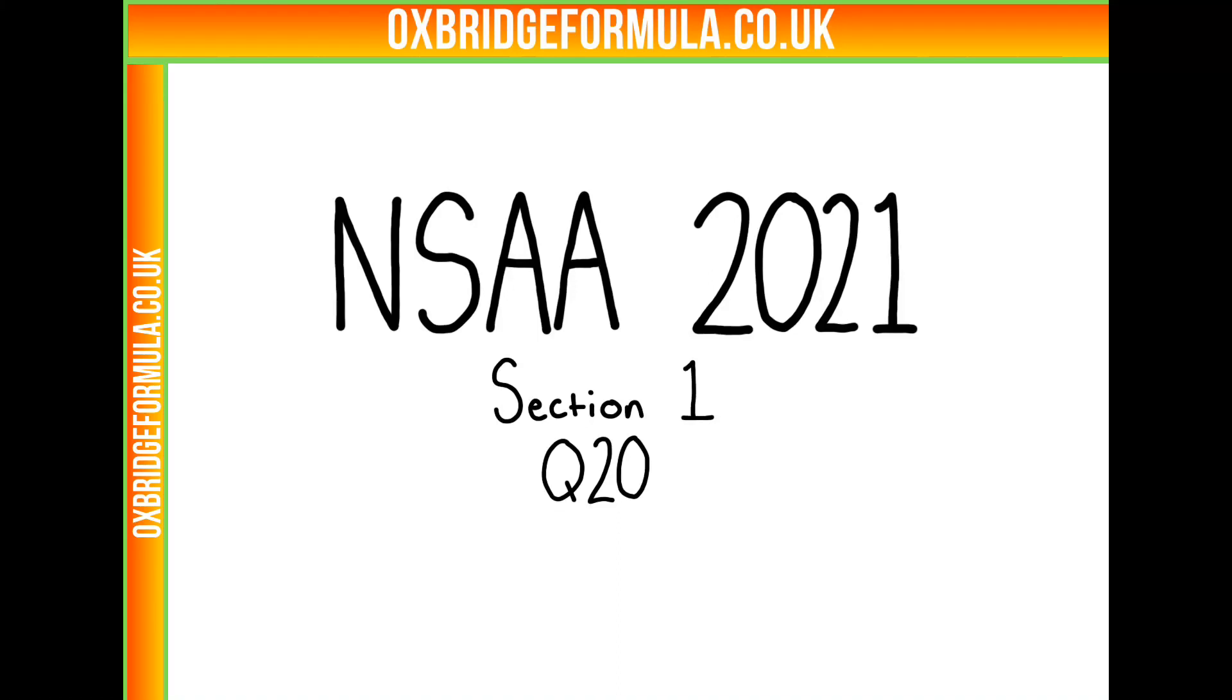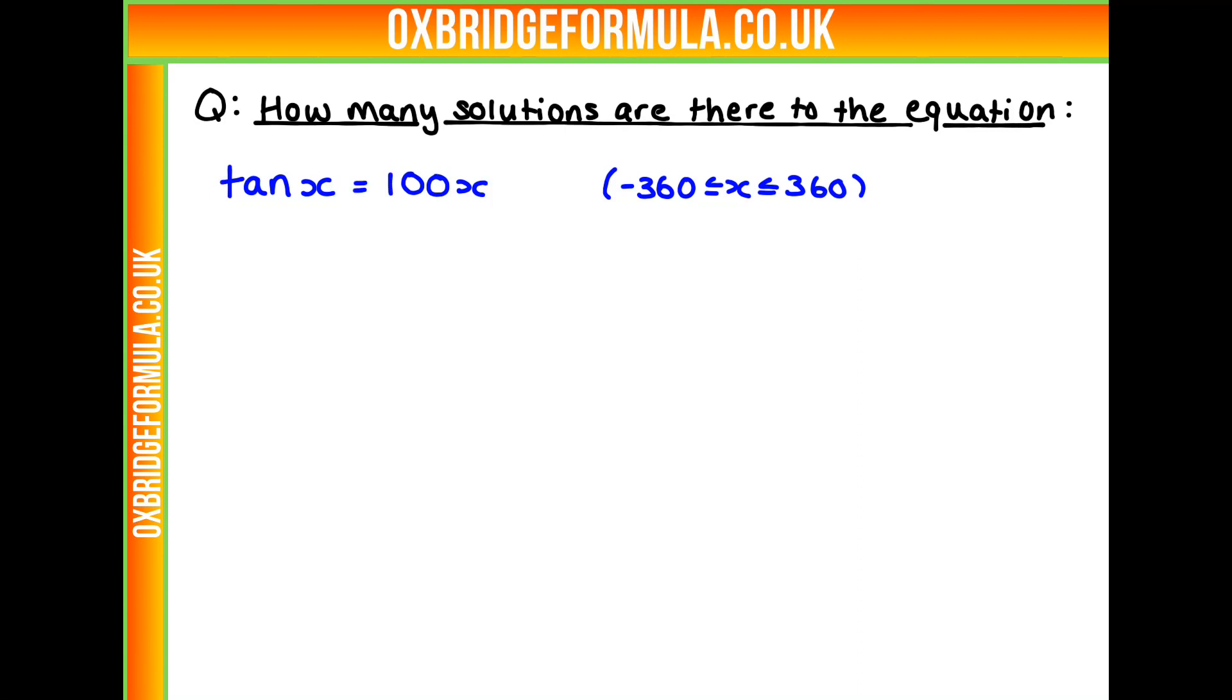This is ENSA 2021, section 1, question 20. So our question is, how many solutions are there to the equation tan x equals 100x in the range minus 360 to 360?